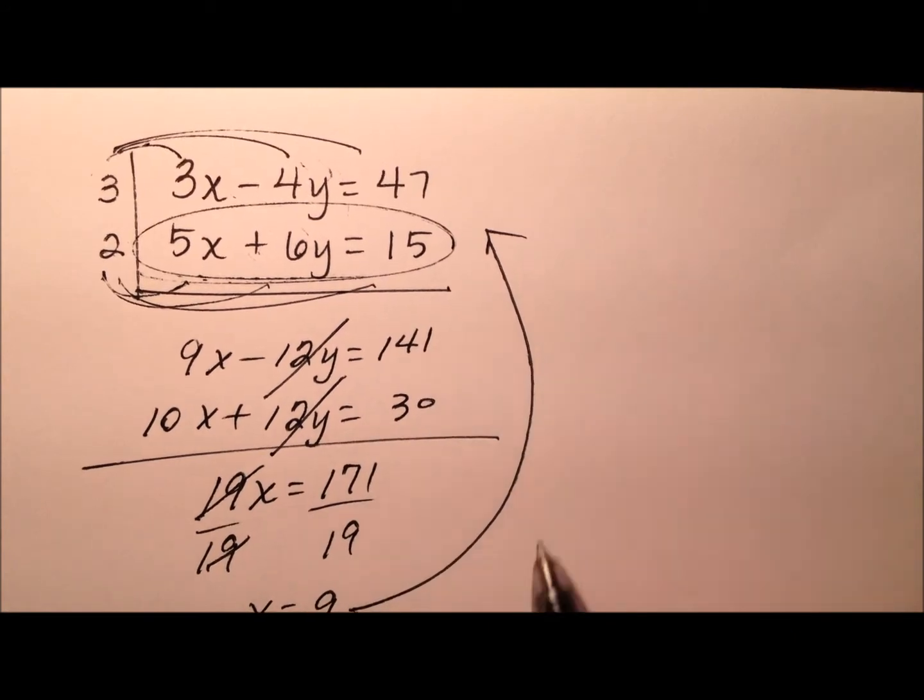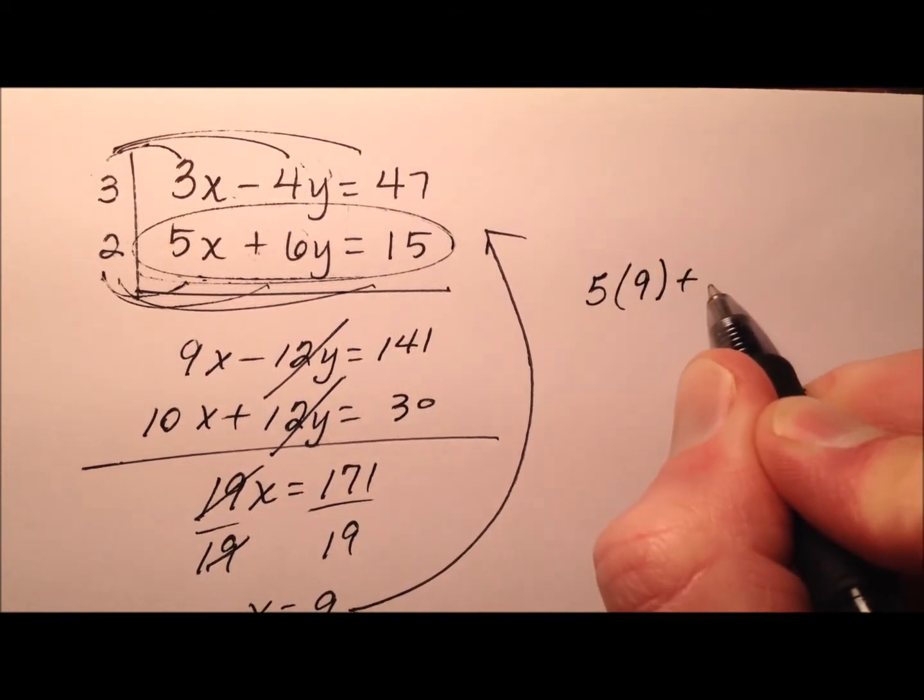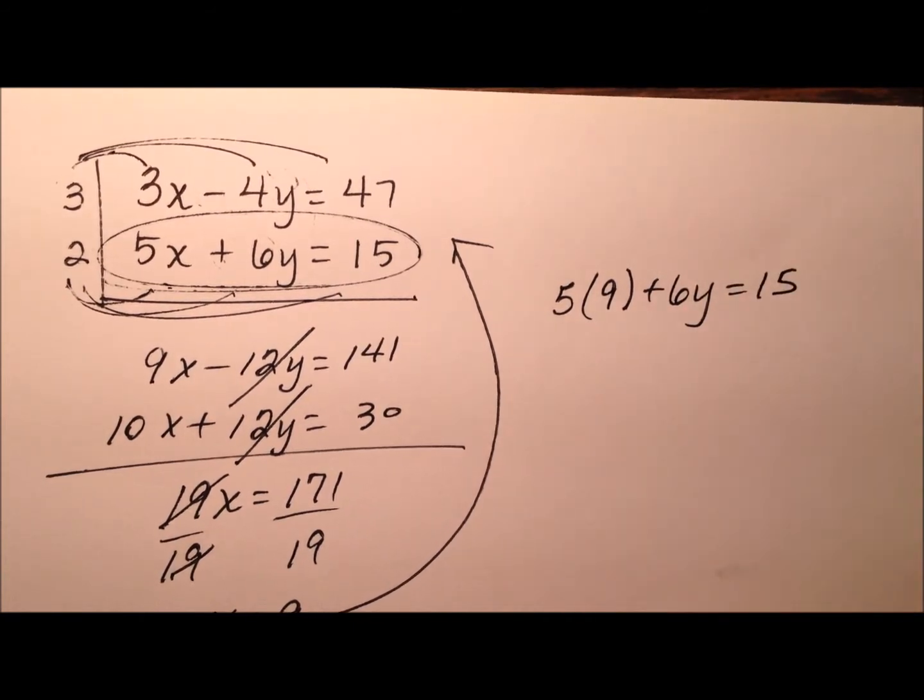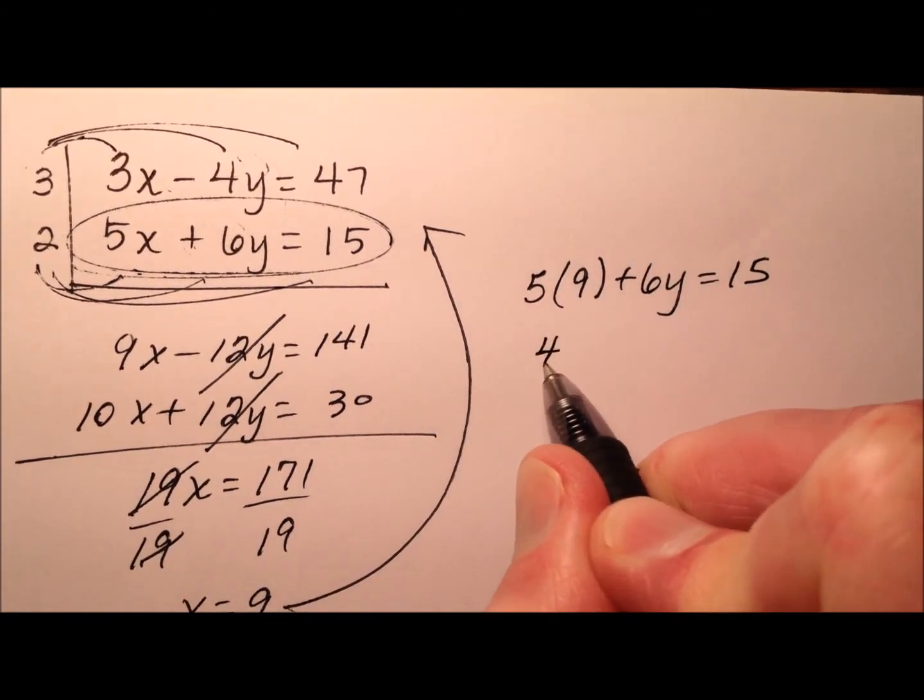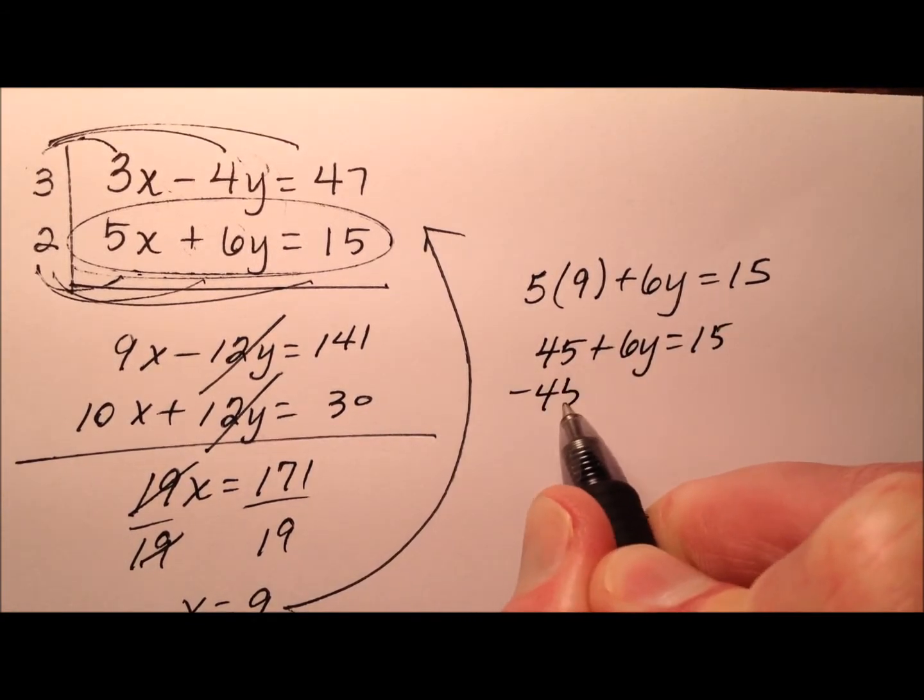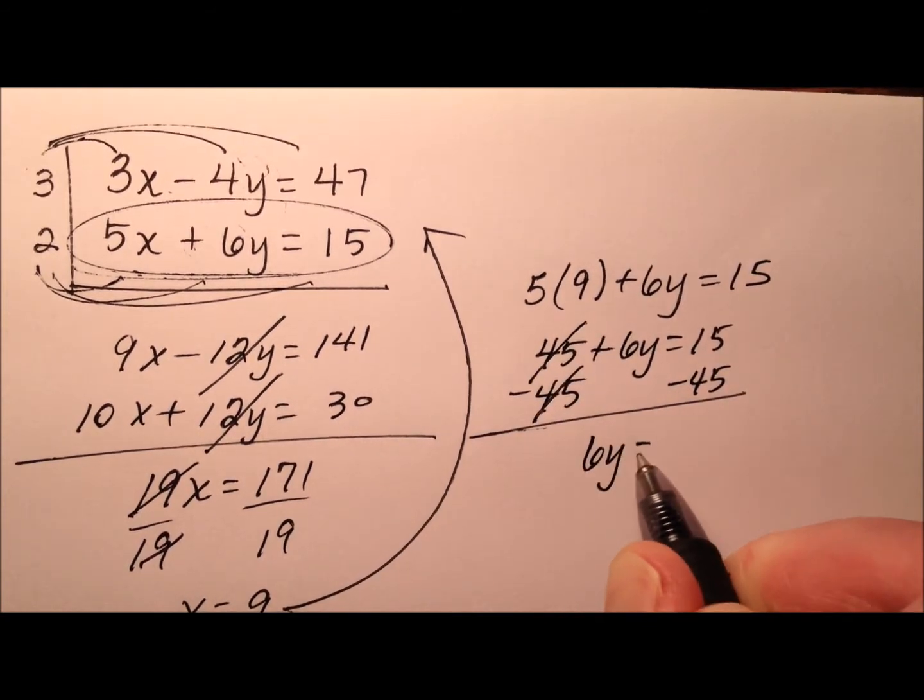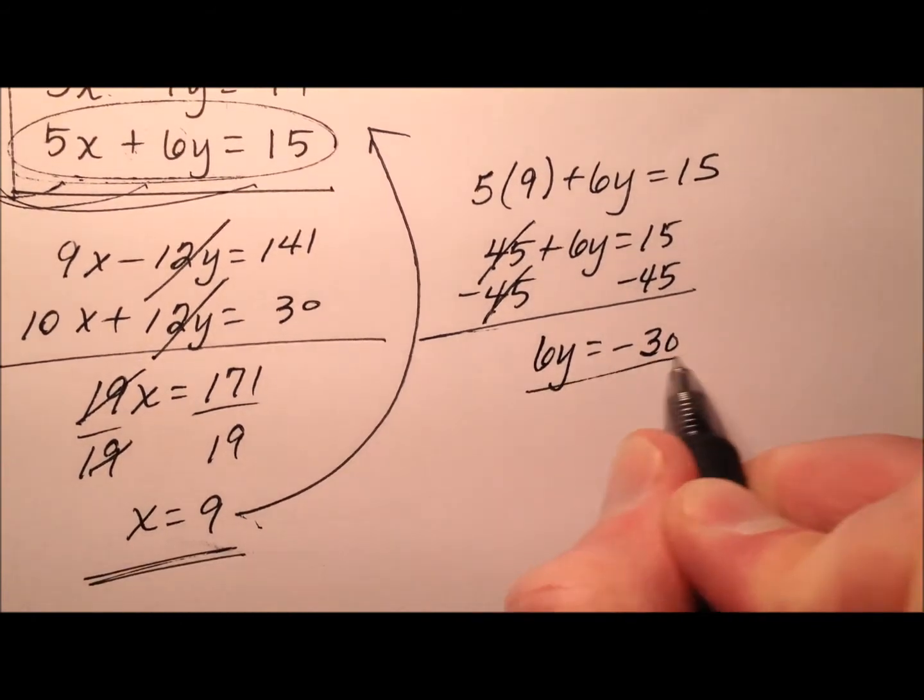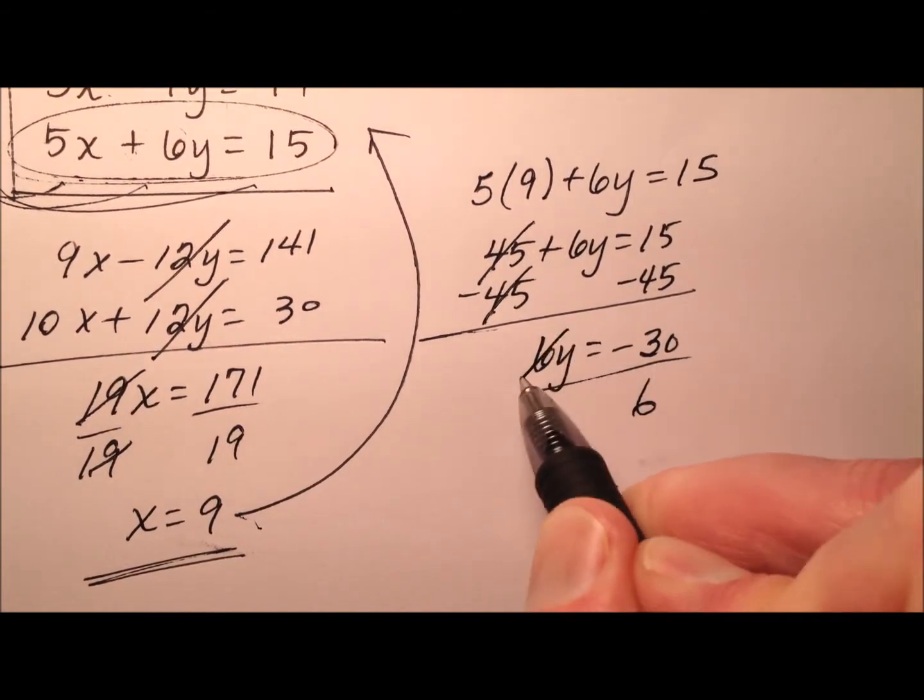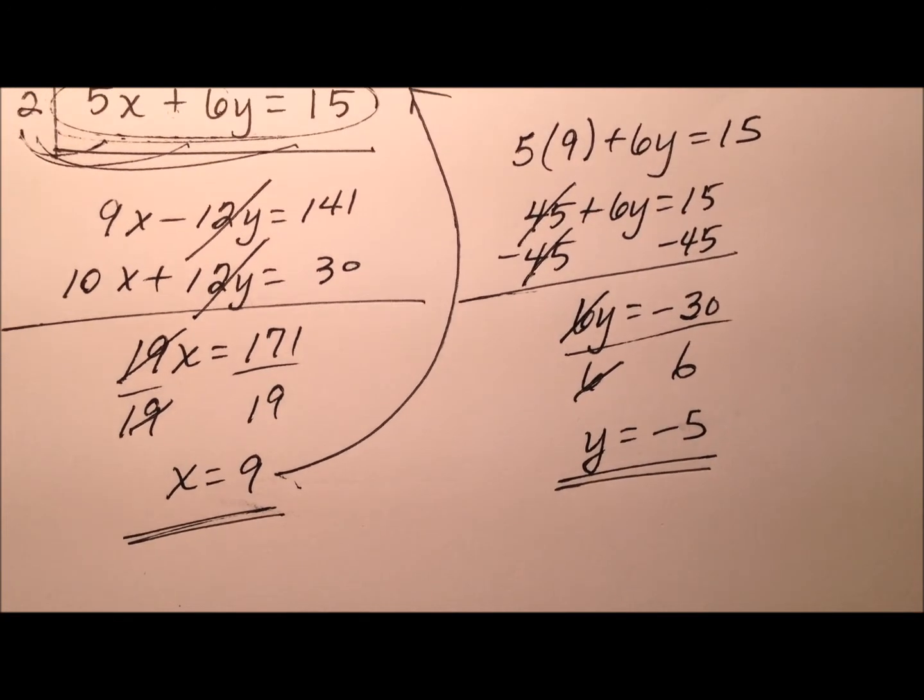So now that we know one of the values, let's go ahead and plug it back in. Let's use the second equation. So 5 times x, so 5 times 9 plus 6y equals 15. So 45 plus 6y equals 15. We'll go ahead and do our little two-step equation, get our 6y by itself. That equals negative 30 right now. And then we can do a little division. And our y value should equal negative 5.